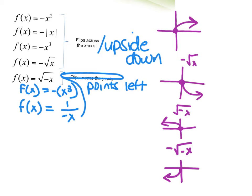Here's the best part: if you're unsure which direction it goes, just plot a point. The idea is that transformations help you do it quicker, but it is less precise. So if you are unsure, then just plot a point.